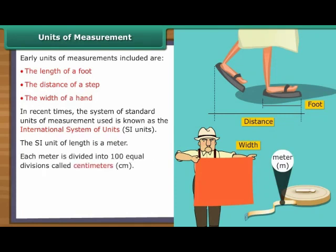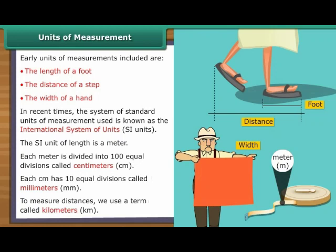Each metre is divided into 100 equal divisions called centimetres or CM. Each centimetre has 10 equal divisions called millimetres or MM. To measure distances, we use kilometres or KM.